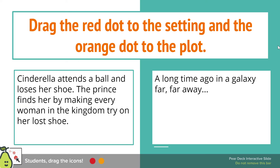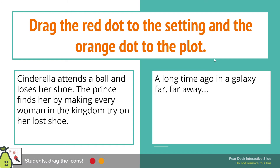We did an exercise in class to drag the red dot to the setting and the orange dot to the plot. The setting — the time and place a story takes place — matches the box that says 'a long time ago in a galaxy far, far away.' The plot — what happened in the story — matches the box about Cinderella attending a ball, losing her shoe, and the prince finding her by having every woman in the kingdom try it on.